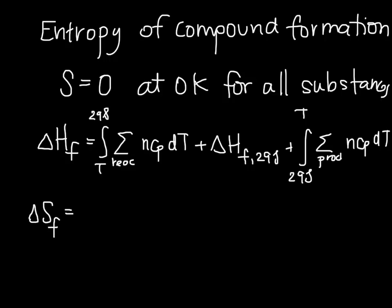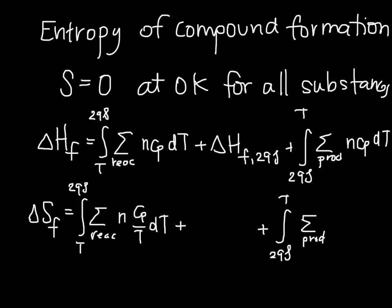And when we have our reactants basically going from T to 298, we can write the analogous expression for the entropy change. So this is still T to 298. We are going to sum over all reactants, and now we have n CP divided by T dT, because this is how we calculate a change in entropy. I'm going to skip step two for the moment and write step three. So 298 up to T, sum over all products of n CP over T dT.